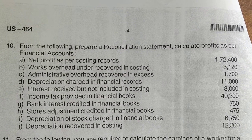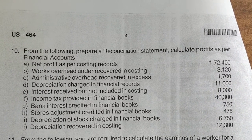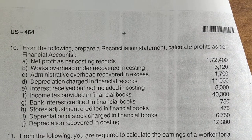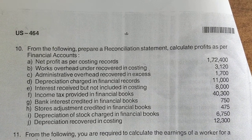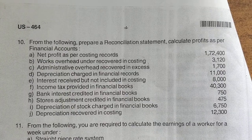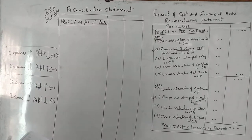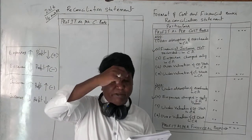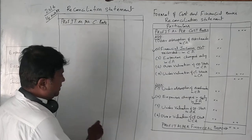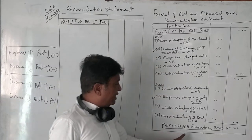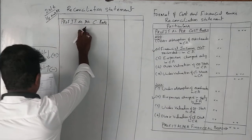This is the 2017 question paper — the same chapter applies for BPM or BPA students also. You can try to write this question in a book; it will be helpful when I'm solving it on the board. From the 2017 question paper: prepare a reconciliation statement and calculate profit as per financial accounts. As per the pro forma, we have to find out net profit as per financial accounting.